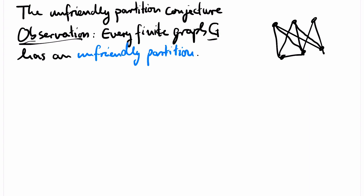Looking at the example drawn on the right, it has the unfriendly partition into blue and non-blue vertices as drawn. In fact, it is easy to construct unfriendly partitions greedily: just start with any partition. If there is a vertex with more neighbors in its own class than in the other class, push it over to the other side and repeat. In this way, the number of edges between the two parts increases strictly. In a finite graph this can only happen finitely many times, so eventually we reach an unfriendly partition. This greedy approach even leads to an algorithm to construct unfriendly partitions.